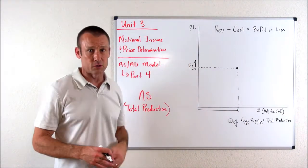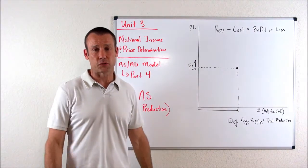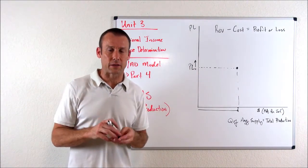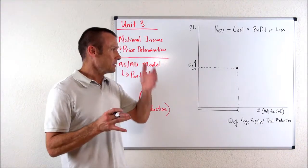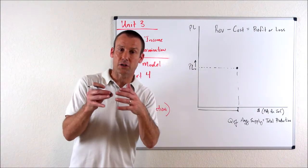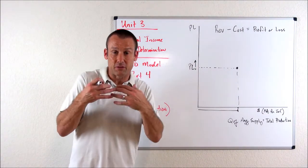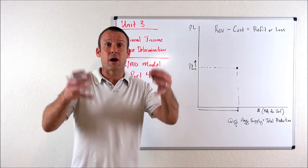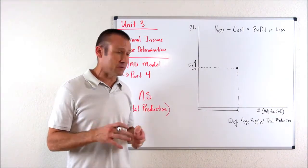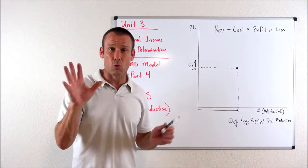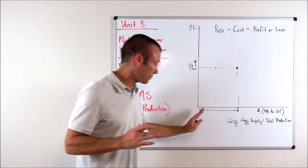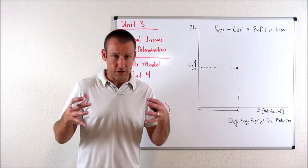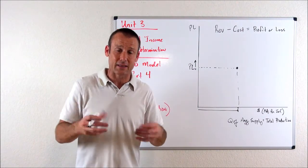How will businesses respond when the price level goes up? For some of us, the answer might be: they're going to produce more. That is the answer, but the reason is not as simple as we might think. Here's the deal — if the price level went up and the prices of all inputs to production and every other price a business must pay also went up at the same time, guess what businesses would do? They would produce no more — zero more. Their change in total production would be zero. They would continue producing the same amount if all costs of production rose simultaneously.